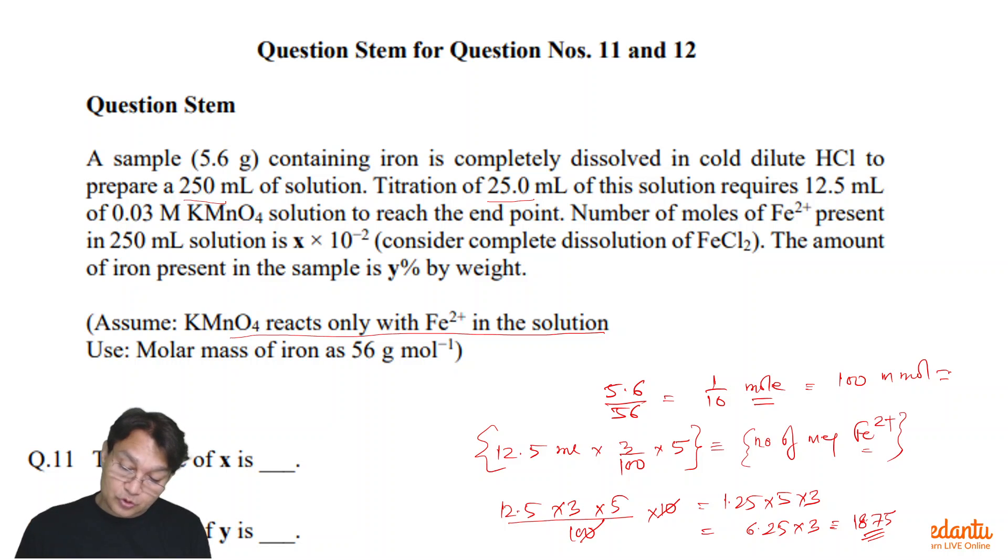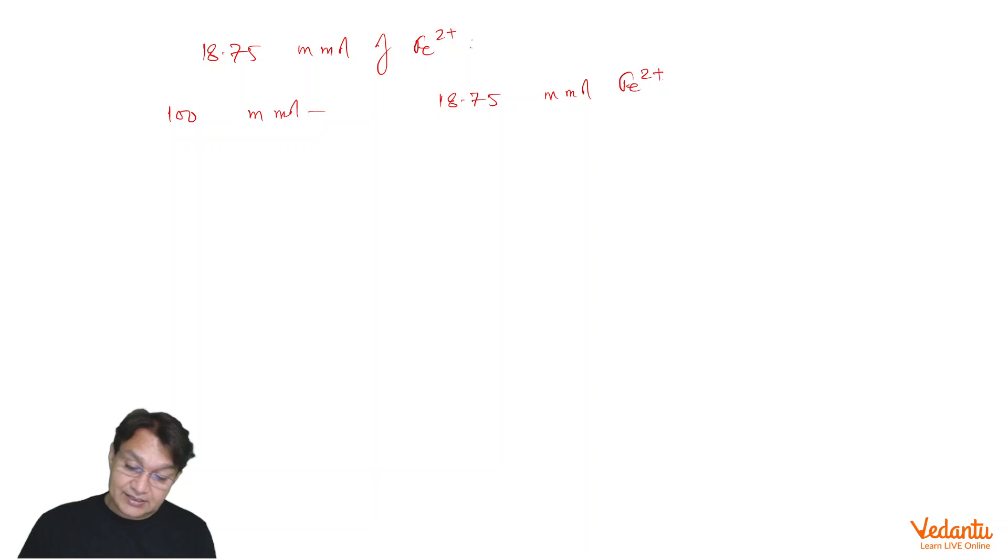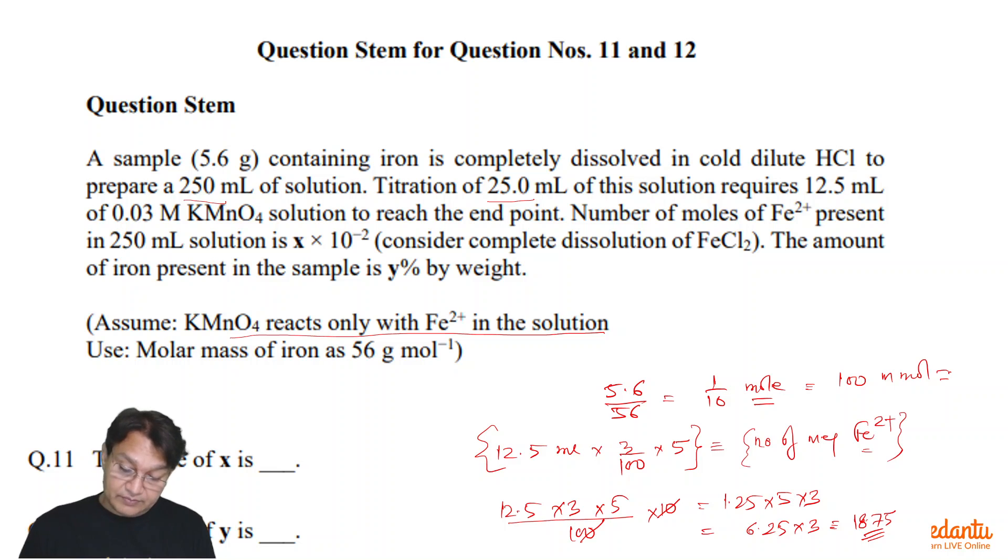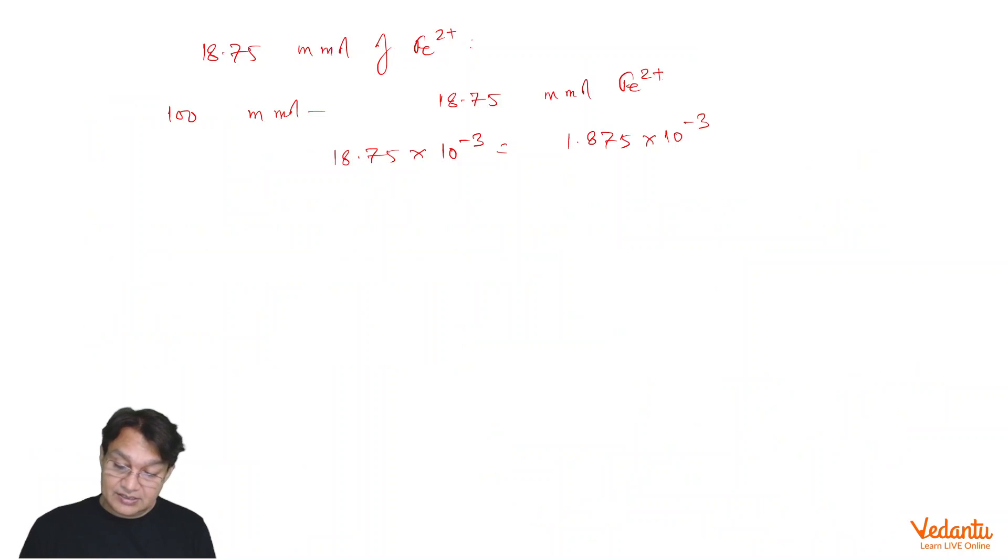Number of moles of Fe2+ present in 250 ml of the solution is 18.75 into 10 to the power minus 3, which is equals to 1.875 into 10 to the power minus 3, and if we round it off that is coming out to be 1.87.